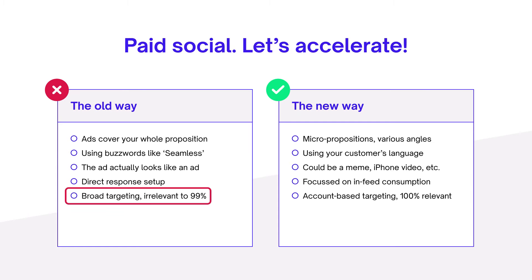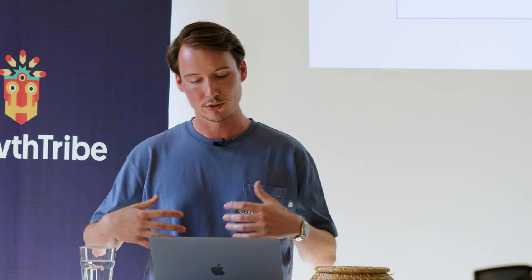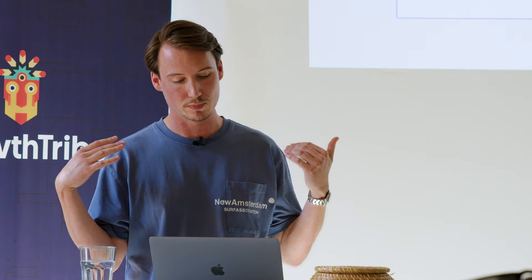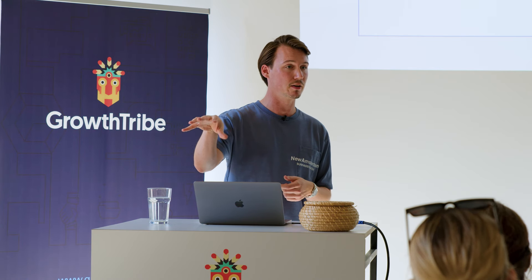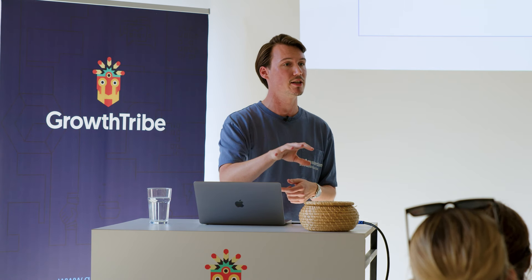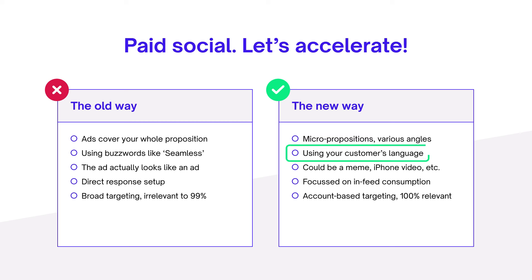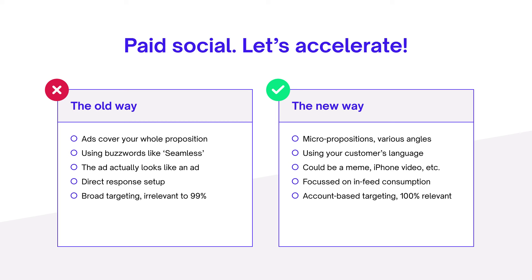Targeting is typically broad and irrelevant to most. Whereas the new way, you try to take your whole proposition and turn it into micro propositions. You use various angles, which allows you to understand which part of your narrative actually resonates with your target audience. You use your customer's language — it could be a meme or an iPhone video, and that's totally fine.